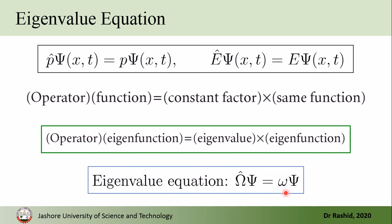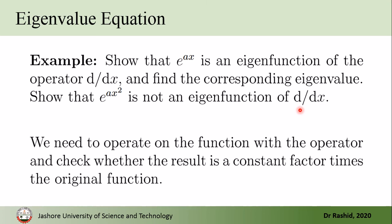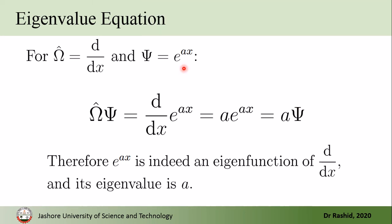To understand this better, consider two wave functions e^(ax) and e^(ax²), and on both we act the differential operator to see which is an eigenfunction. For e^(ax), acting the operator gives a·ψ — a number multiplied by the same function ψ. Since we have the same wave function, we call e^(ax) an eigenfunction of this differential operator.